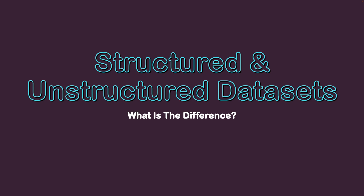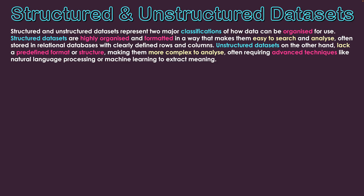Structured and unstructured data sets — what is the difference? Structured and unstructured data sets represent two major classifications of how data can be organized for use. Structured data sets are highly organized and formatted in a way that makes them easy to search and analyze, often stored in relational databases with clearly defined rows and columns. Unstructured data sets, on the other hand, lack a predefined format or structure, making them more complex to analyze, often requiring advanced techniques like natural language processing or machine learning to extract meaning.